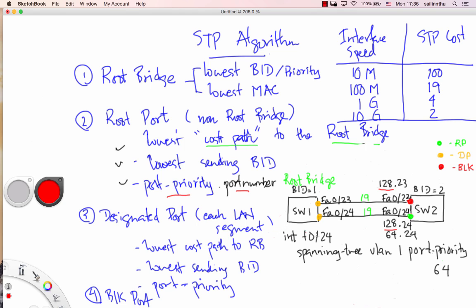We do the configuration on the trainer. The switch one, configure. It was first interface 0 slash 24. Switch to my computer, switch to my computer.